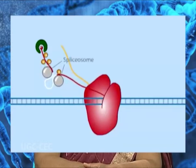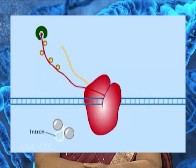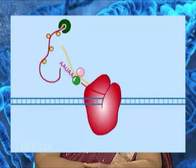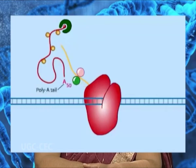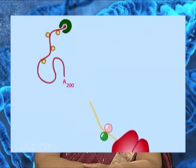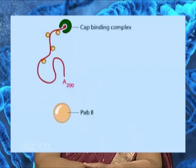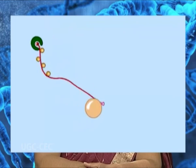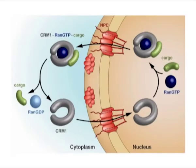The cap binding complex is not crucial for the transport of mRNA but may play a role in directional translocation, since the 5-prime end of mRNA is transported in the lead. Export receptors bind to the export signals and carry the cargo — the mRNA — to the other side of the nuclear pore complex. In the case of mRNA transport, an export receptor called CRM1 is believed to be important.